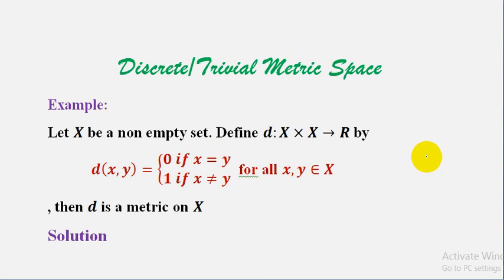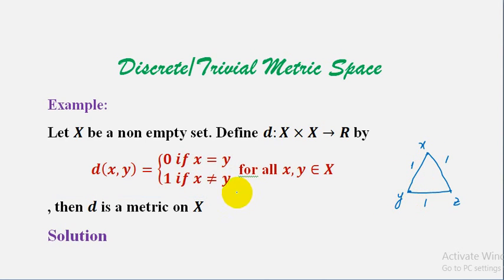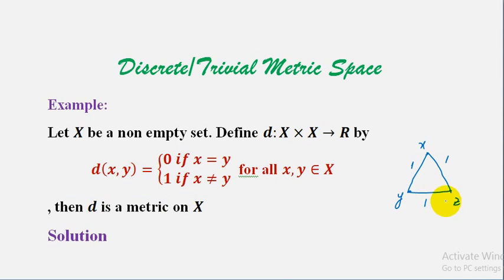For example, if we take three points x, y and z as the vertices of an equilateral triangle, then the distance of x and y equals 1, the distance of y and z is also equal to 1, and the distance of x and z is also equal to 1. So in this case, when x is not equal to y, d(x,y) = 1, and for the same point, d(x,x) = 0, d(z,z) = 0, and d(y,y) = 0. For same points distance is 0, and for two different points distance is 1.